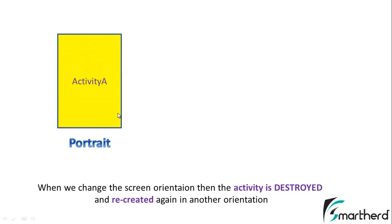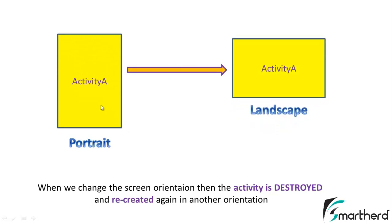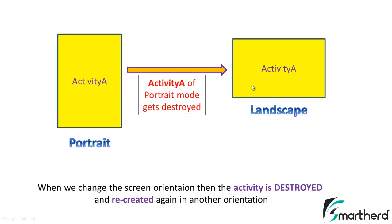Whenever we switch from portrait to landscape or landscape to portrait, the activity is destroyed. This means when we change the screen orientation, the activity is destroyed and recreated again in another orientation. So when switching from portrait to landscape mode, activity A of portrait mode gets destroyed and recreated in landscape mode. Again, on onCreate method is called, our variables will be re-initialized, and all the data present in the activity will be completely lost.